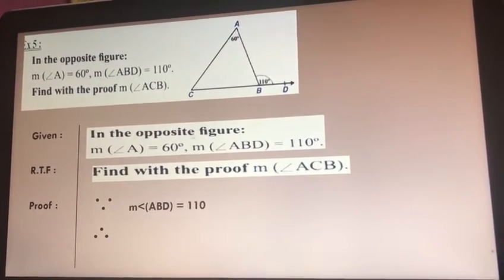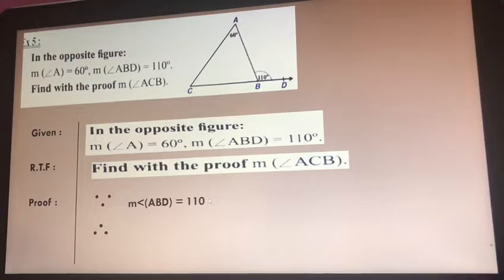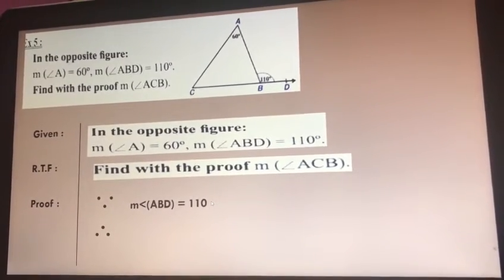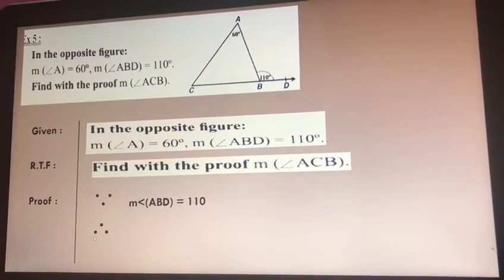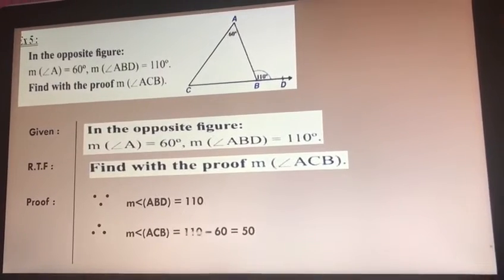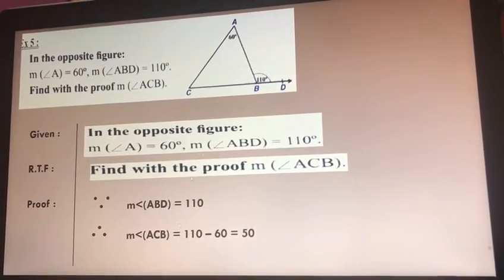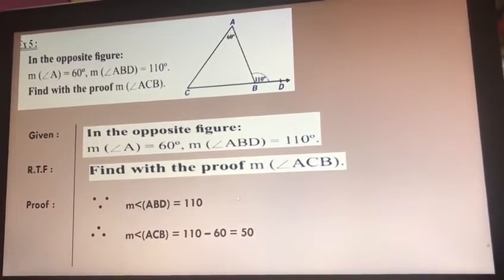Since M angle ABD equals 110, so what do we mean by this? Therefore, what shall we get? M angle ACB equals 110 minus 60 equals 50.